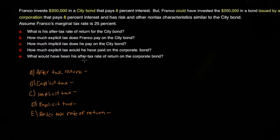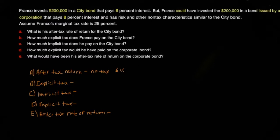Part A: What is his after-tax rate of return for the city bond? Since there is no tax on a municipal bond — no tax on a muni — the after-tax rate of return is still six percent. That was an easy one.